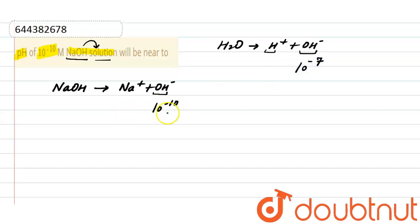Now the total concentration of OH- ions here will be 10 raised to the power minus 10 plus 10 raised to the power minus 7. And from here the total concentration is 1.001 × 10 raised to the power minus 7.